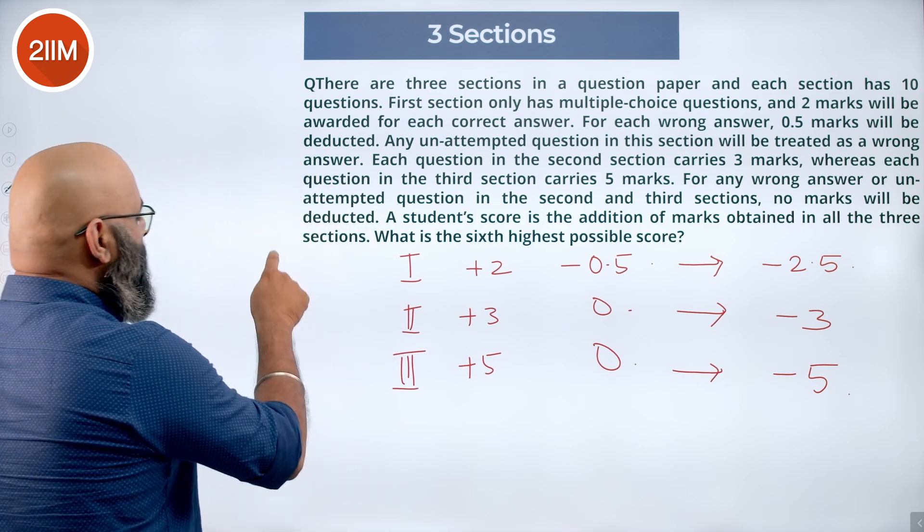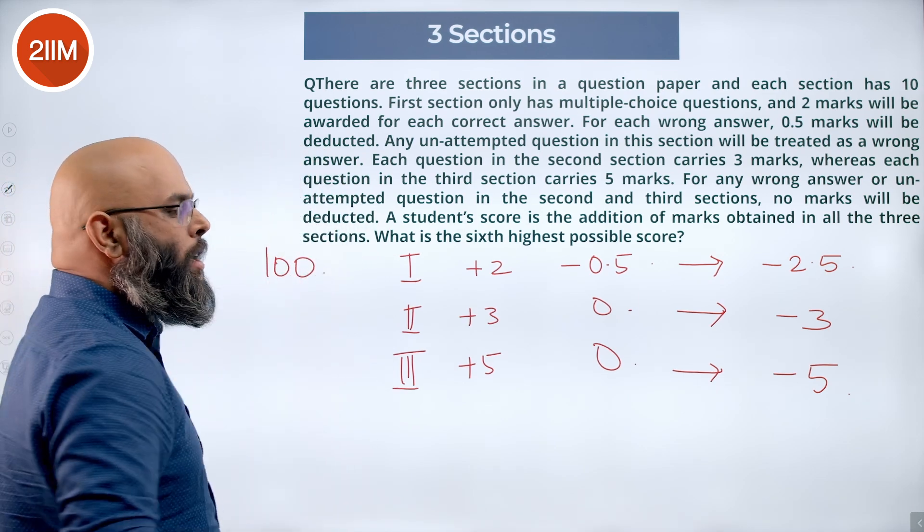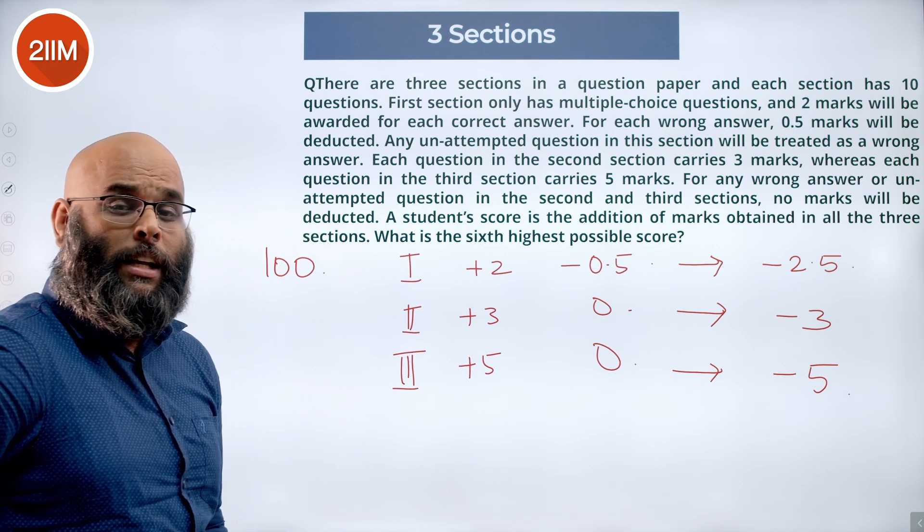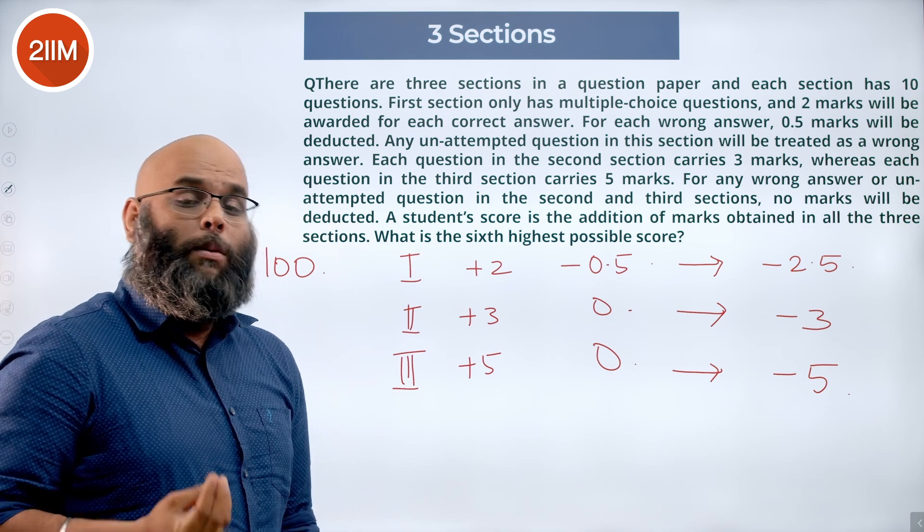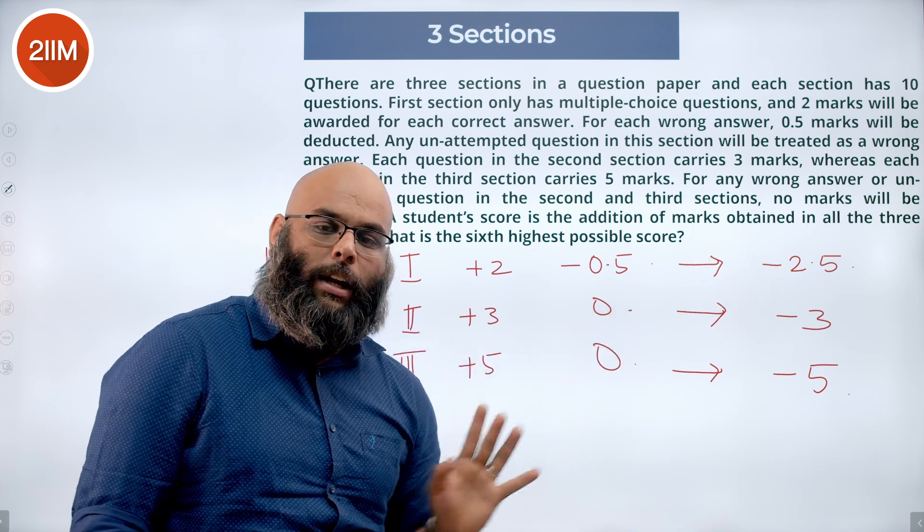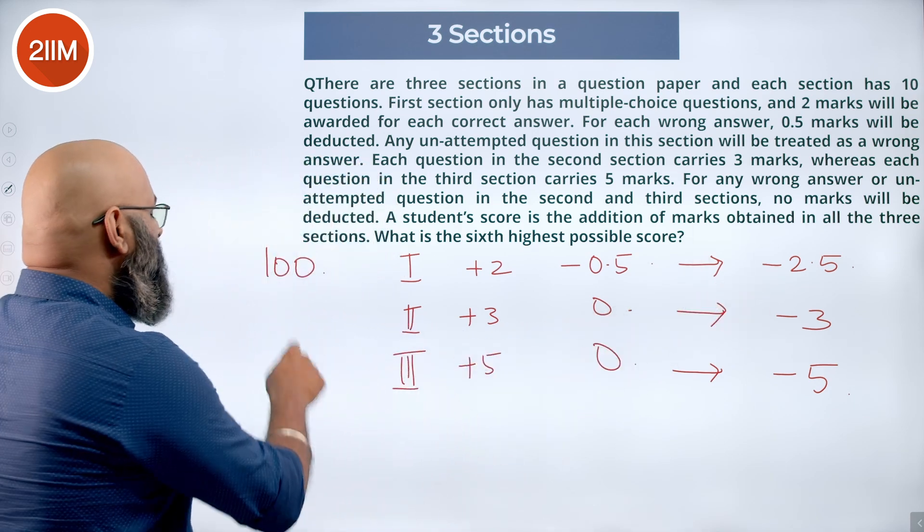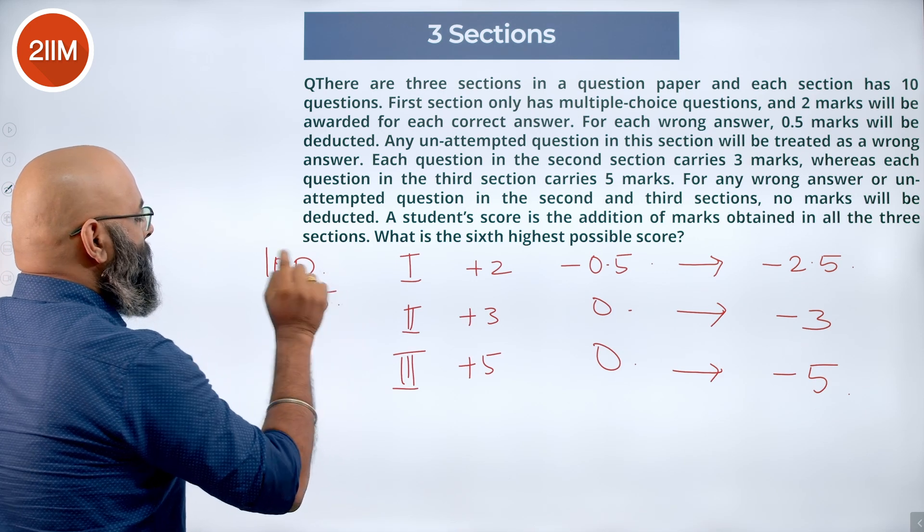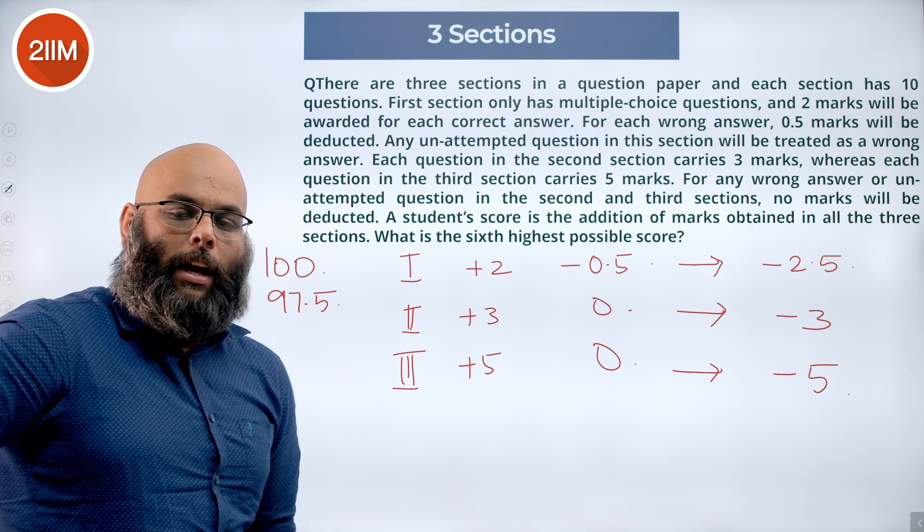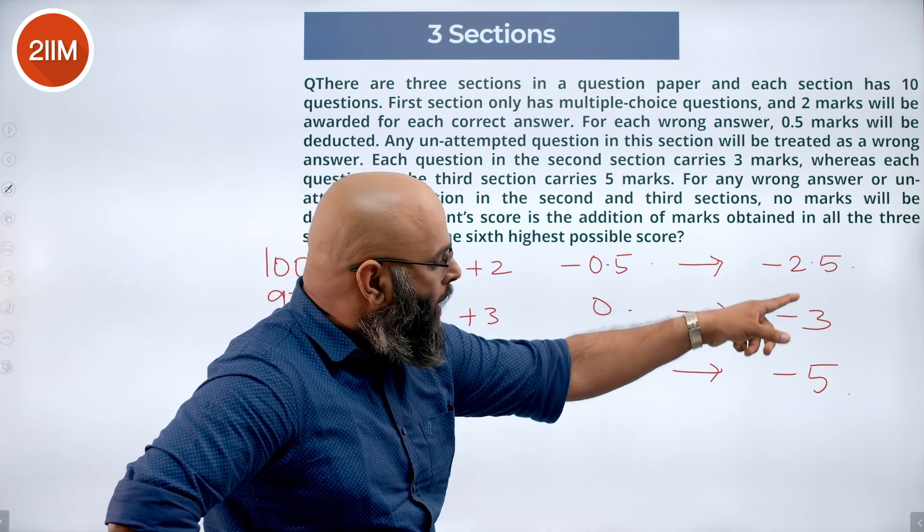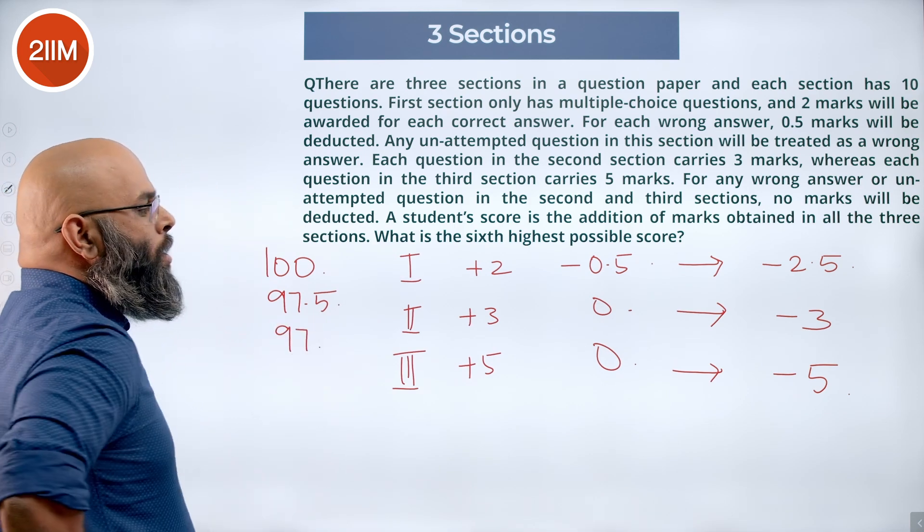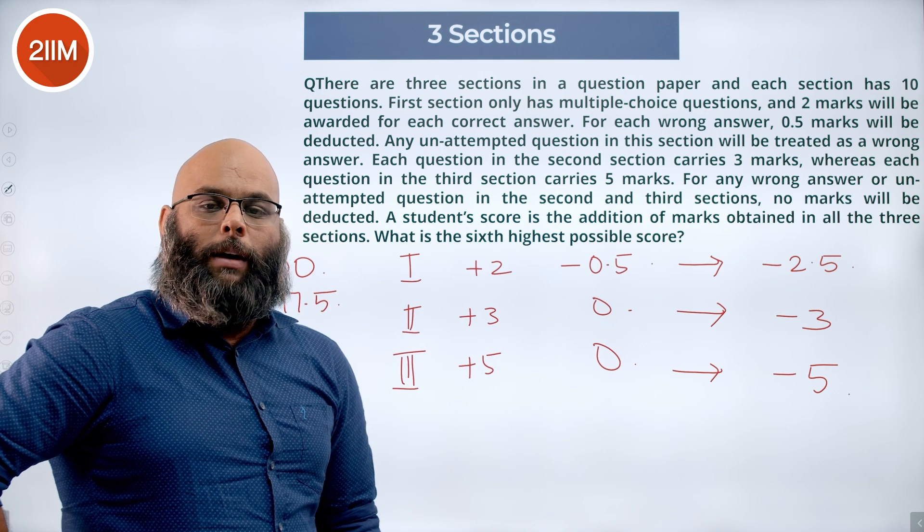Now I know that the highest mark is 100. Now what will be the second highest mark? The one who gets the second highest, he loses out on the least possible mark that he can. Now of the three, I can clearly see he is missing out on this 2.5. So that means he is going to get 97.5. And what is the next least mark that he can miss out? If he can miss out on 2.5, the other one can miss 3. So this person can get 97.